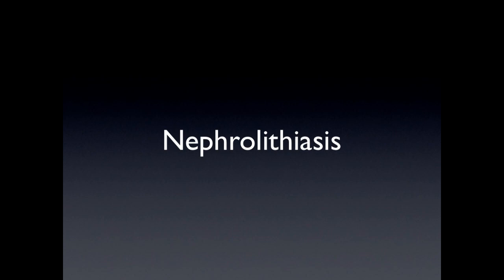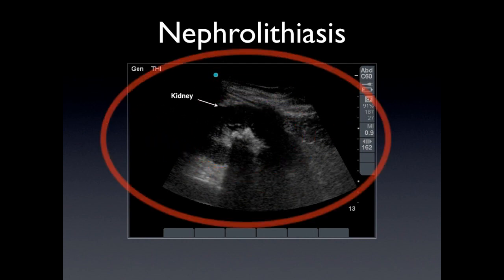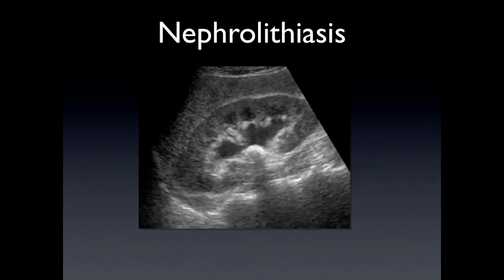Nephrolithiasis. We're unable to see stones that are within the ureters, but within the kidneys we will be able to identify stones. In this case, you'll see the kidney here — there's a cortex, and you have two hyperechoic structures in the middle. You know that there are stones because you have an artifact — in this case, a shadow behind the stones. That's a clean shadow, signifying the presence of a stone. In this case, you are also able to see there's a little bit of hydronephrosis, with a stone there and a shadow behind it.